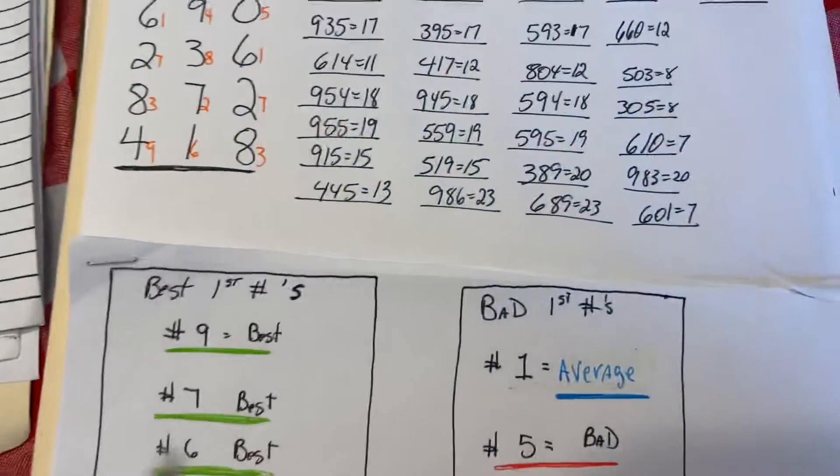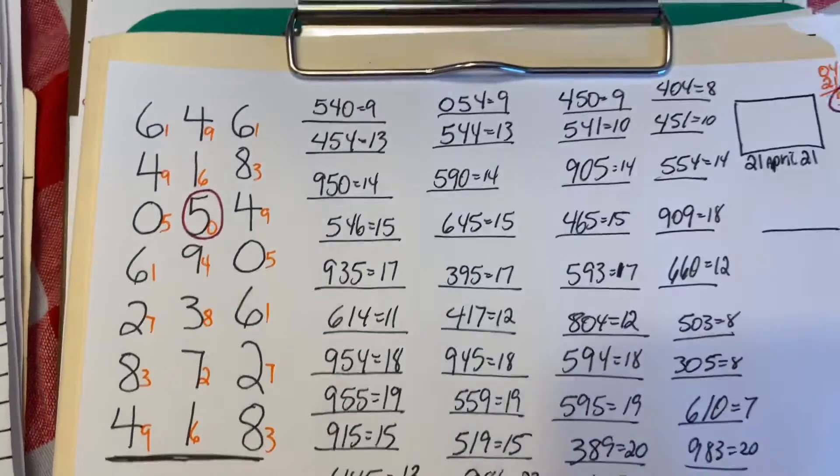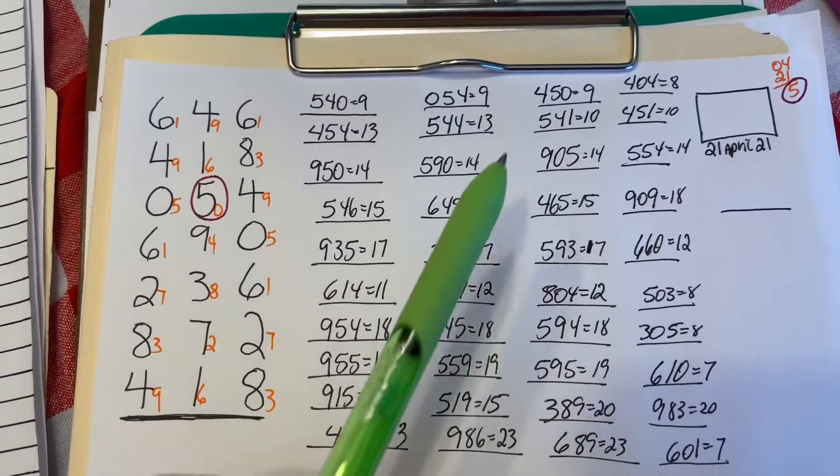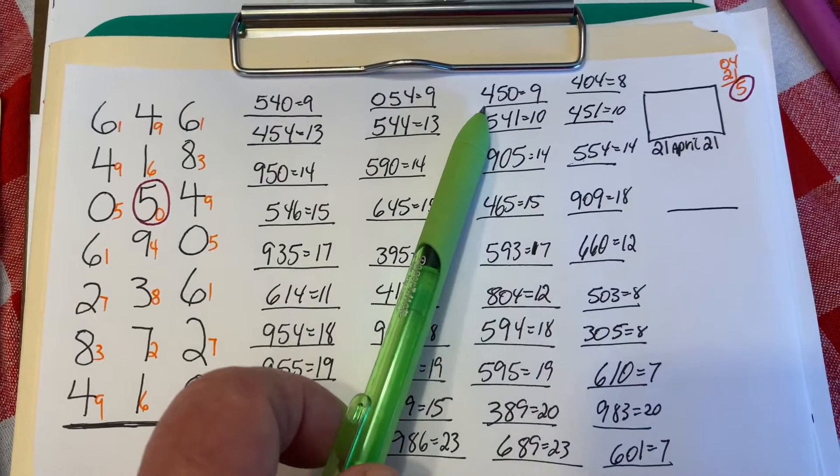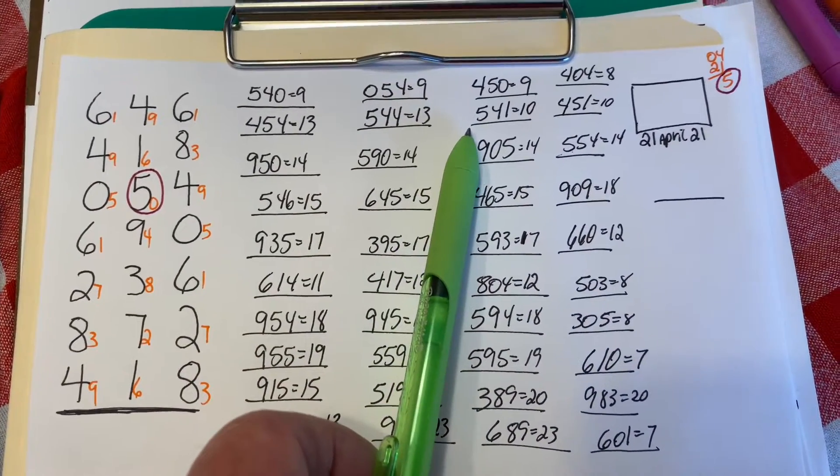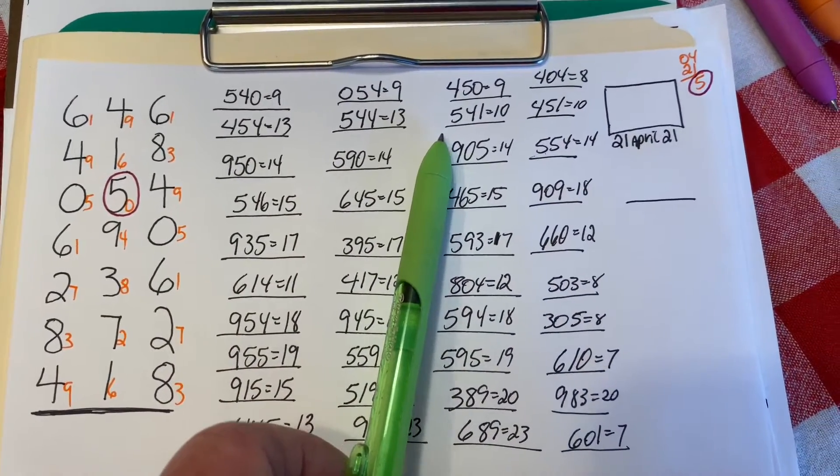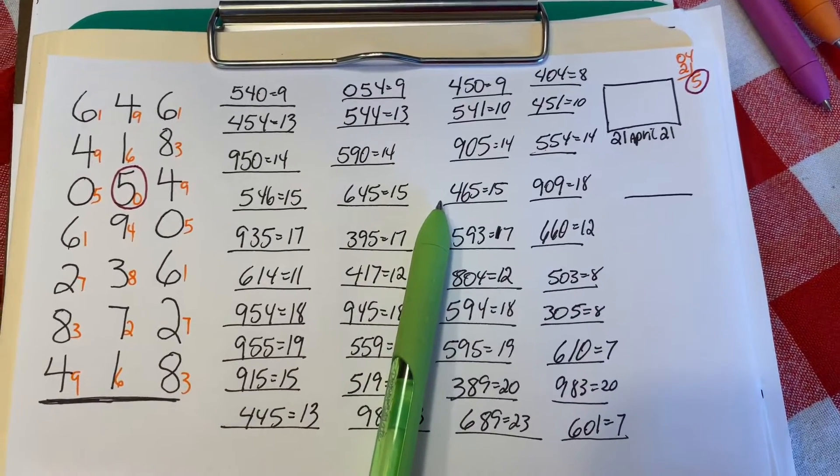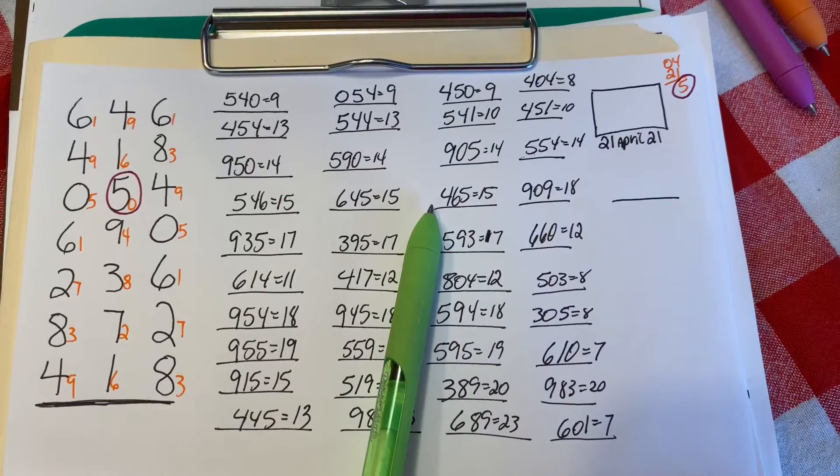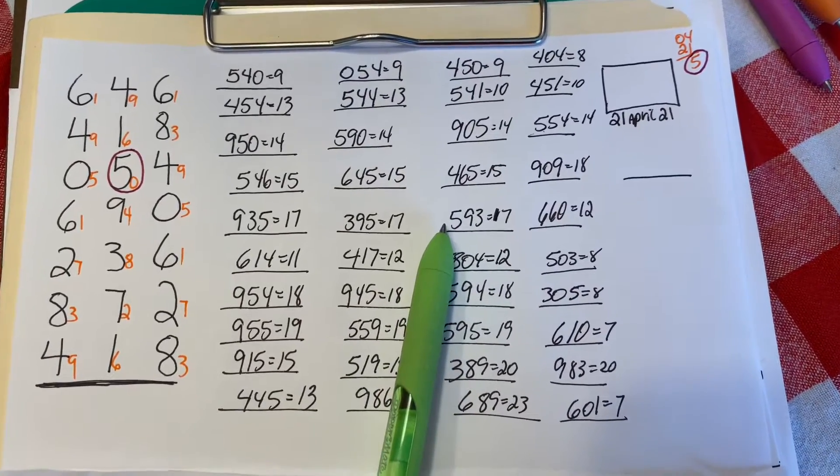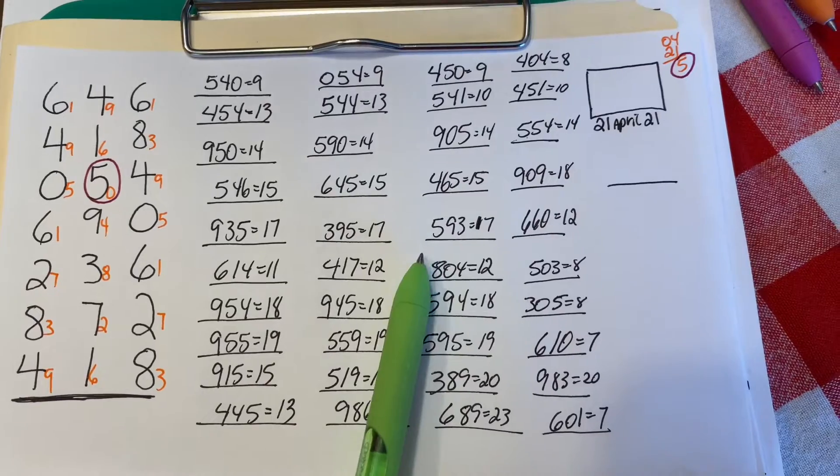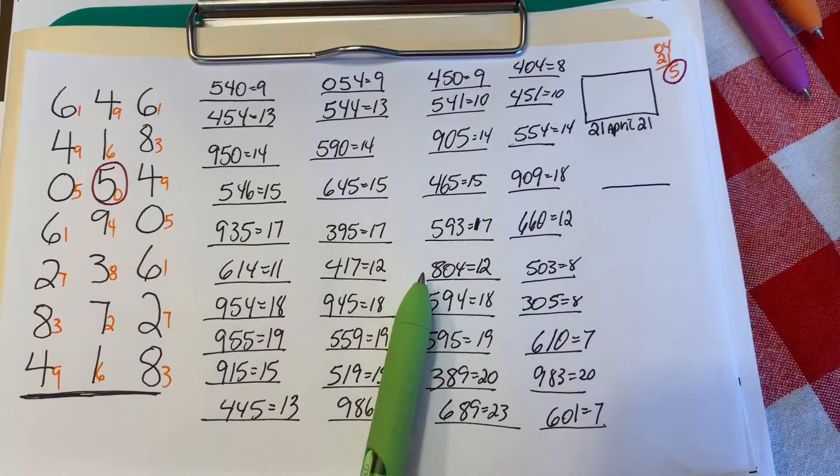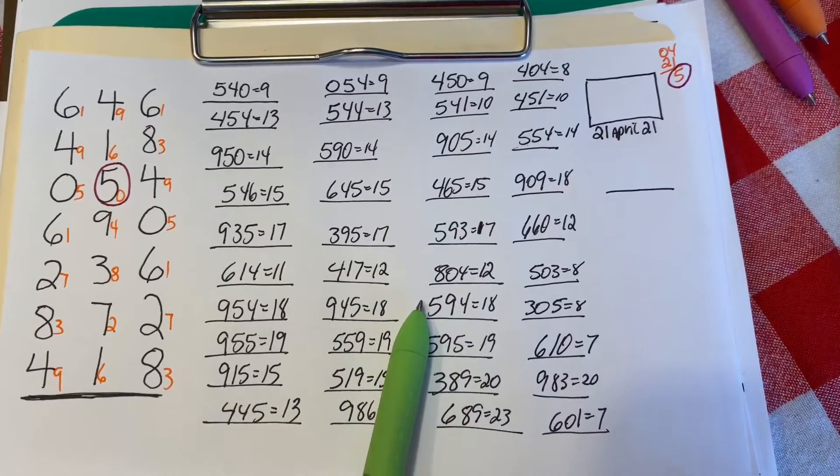We're going to move right on to the third row: 450, 450, 541, 905, 465, 593, 804, 594.